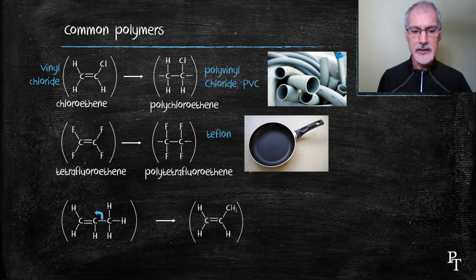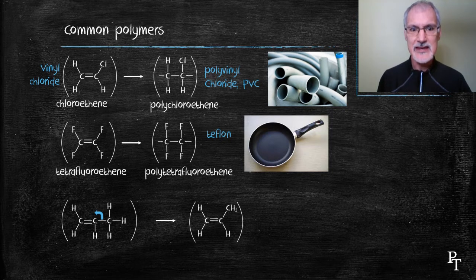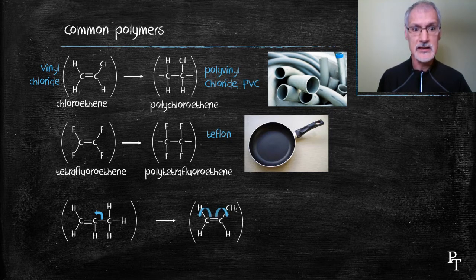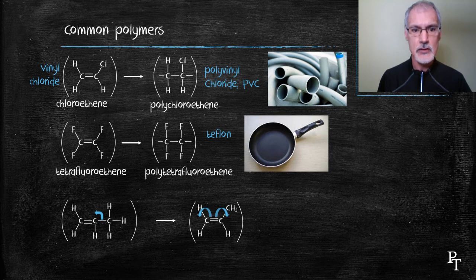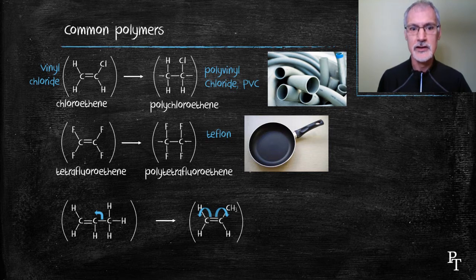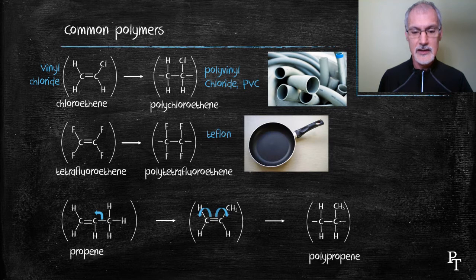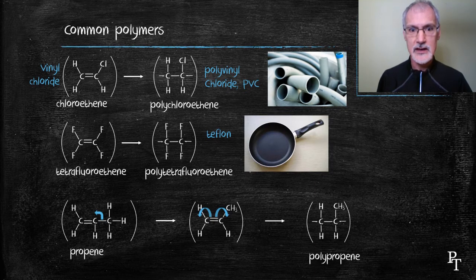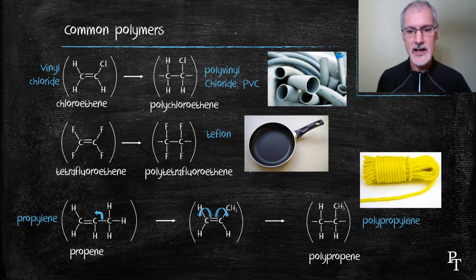So when that double bond breaks we have attachment points at either end of the double bond, not at the end of a three carbon chain, it's only attachment points at the ends of the double bond and that then forms the following polymer with branches of methyl appearing on alternating carbons. This is called polypropene and we also know it as polypropylene and perhaps you've seen that yellow rope you might pick up from Canadian Tire is made of that particular material.